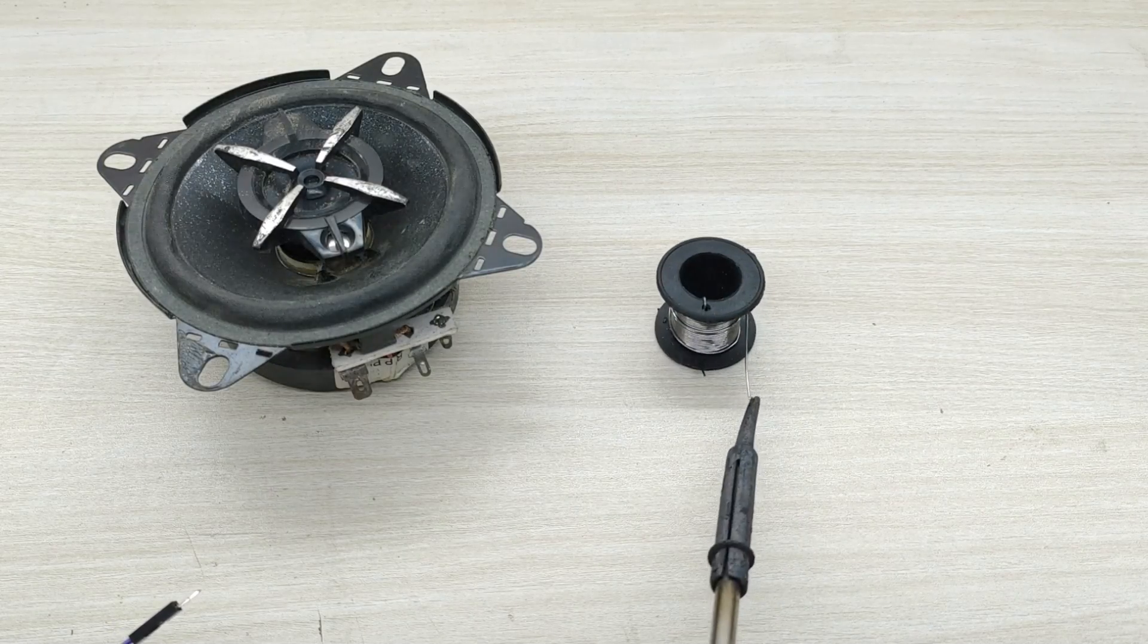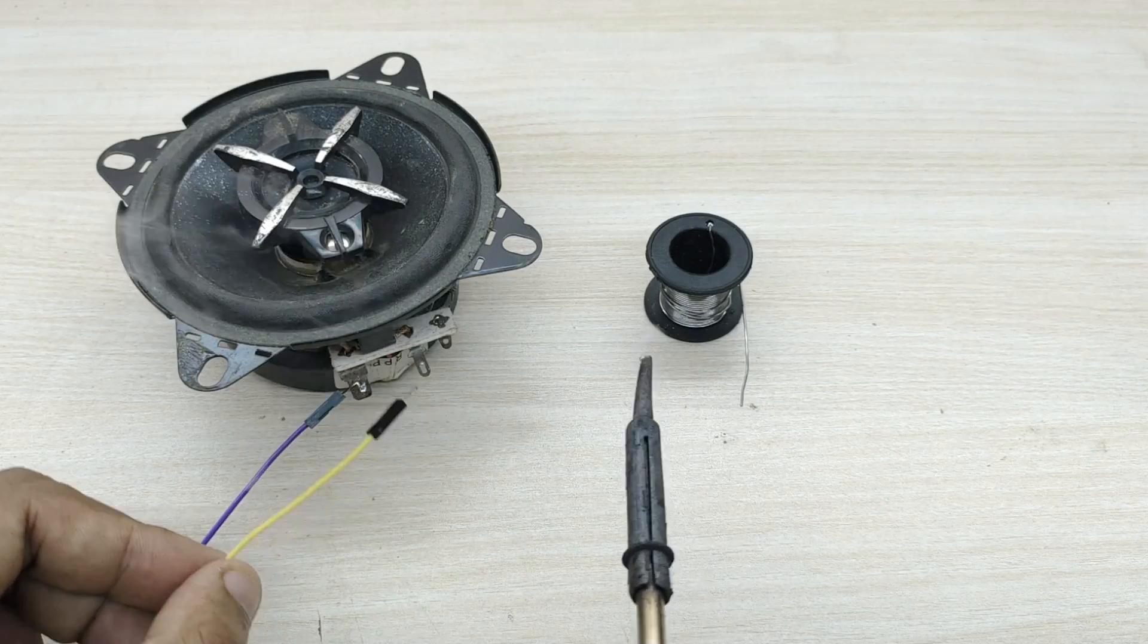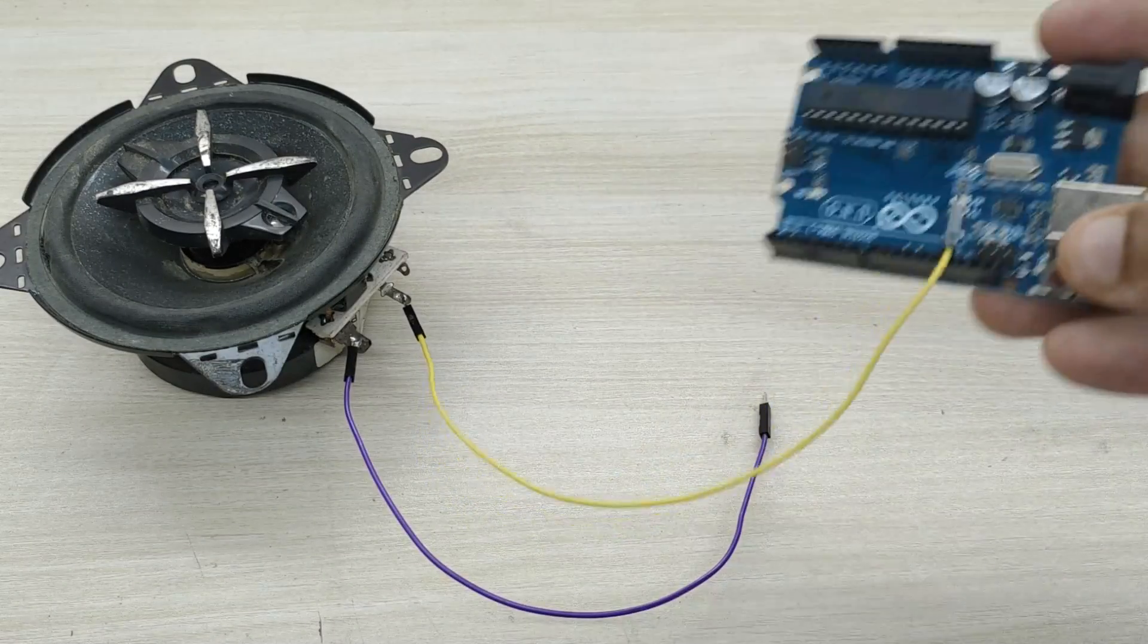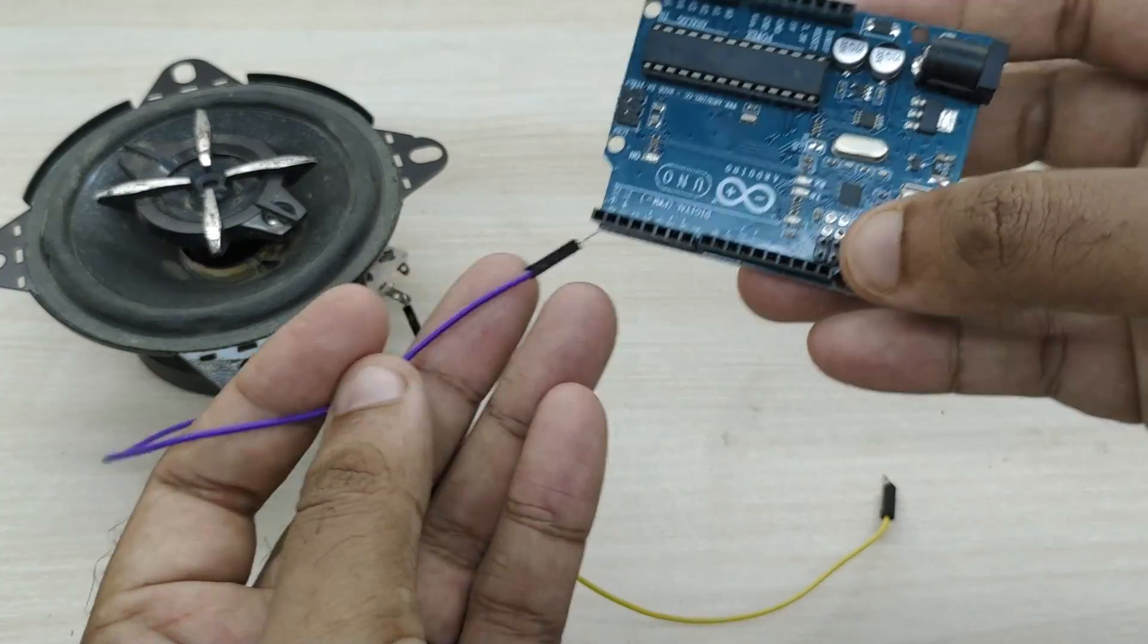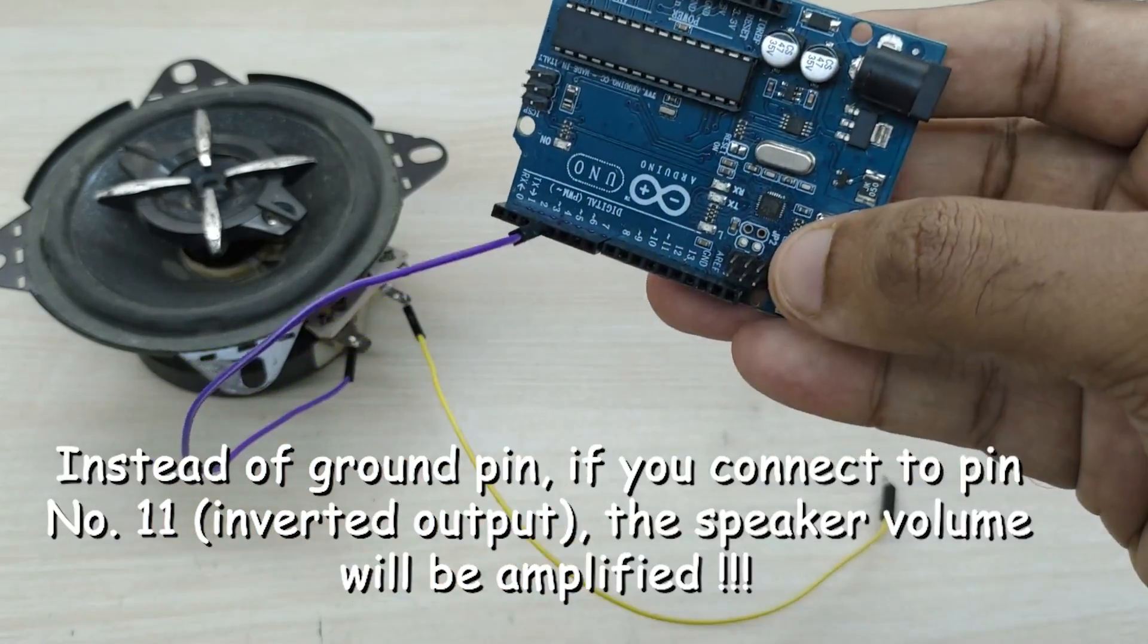First we have to solder two jumper wires to the speaker. Now, connect one wire from speaker to pin number 3 of Arduino and another wire from speaker to ground pin of Arduino.